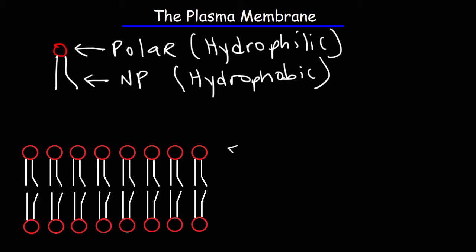So what we have here is known as the phospholipid bilayer which makes up the cellular membrane. On the inside of the cell is an aqueous environment, an environment that contains water. And the same is true on the outside of the cell.